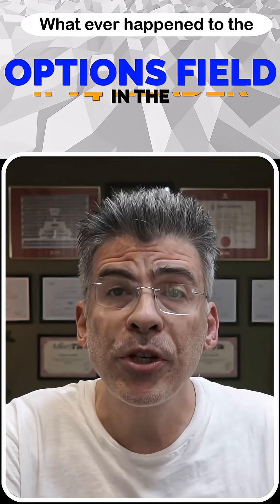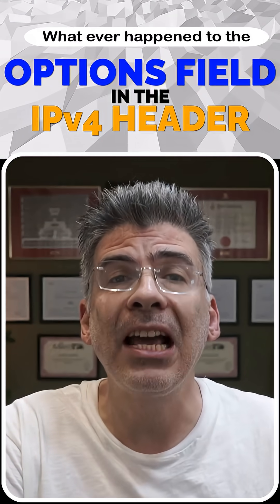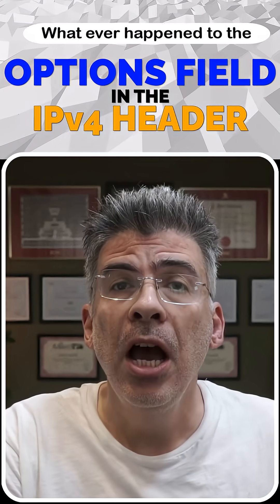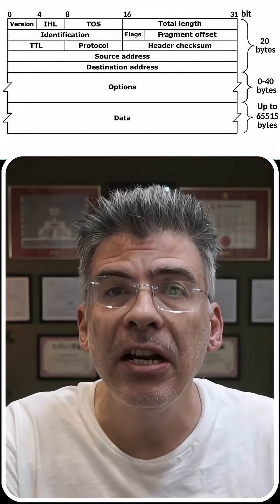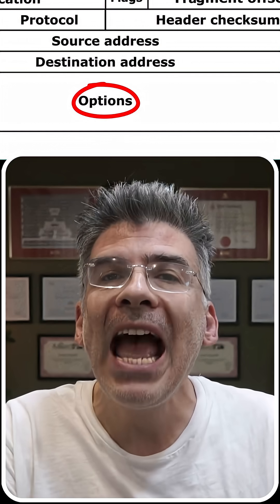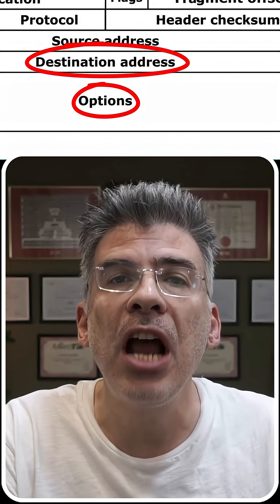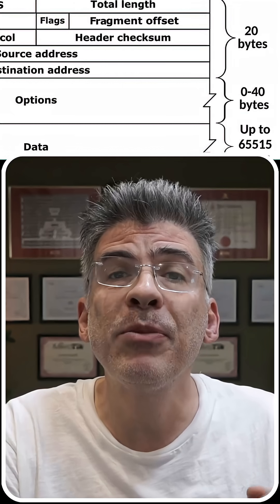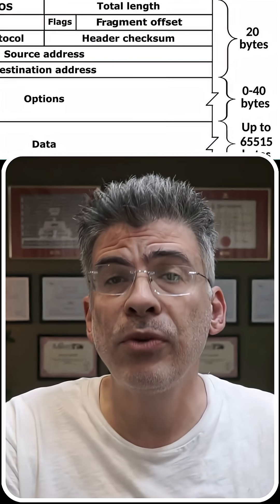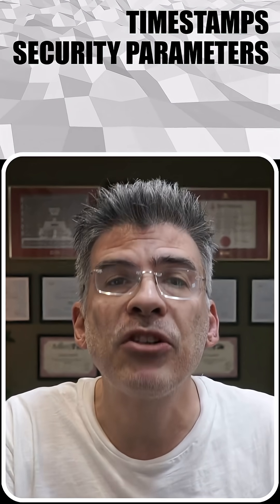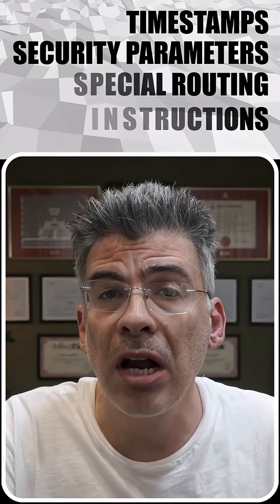Whatever happened to the options field in the IPv4 header? According to the official IPv4 spec, every IP packet header can include an options field right after the destination IP address. This field can range from 0 to 40 bytes in length. It was originally designed to support features like timestamps, security parameters, and special routing instructions.